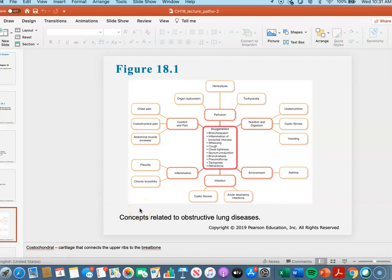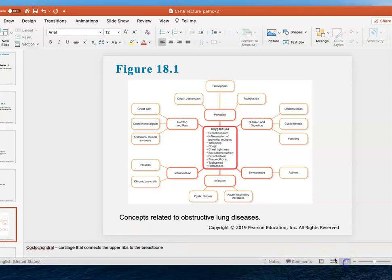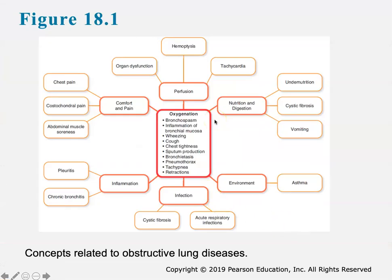The term costochondral pain refers to the cartilage that connects the upper ribs to the sternum. Obviously, if you're coughing a lot, you can end up having pain there. Also abdominal pain and muscle pain because of that increased coughing and the effort of coughing and trying to get mucus out.